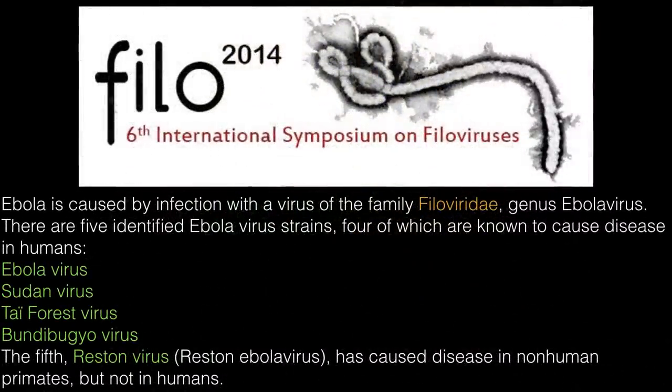Ebola is caused by an infection with the virus of the family Filoviridae, genus Ebolavirus. There are five identified Ebola virus strains, four of which are known to cause disease in humans: the Ebola virus, the Sudan virus, the Tai Forest virus, and the Bundibugyo virus. The fifth, the Reston virus, has caused disease in non-human primates but not in humans.